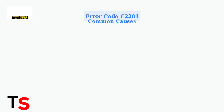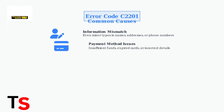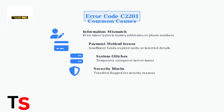There are four main causes of Error Code C2201. First, information mismatches, where even minor typos in personal details can trigger the error. Second, payment method issues like insufficient funds or expired cards. Third, temporary system glitches within Western Union's network. And fourth, security-related blocks when transfers are flagged for protection.